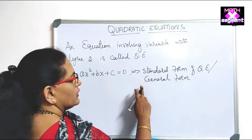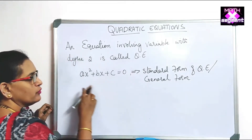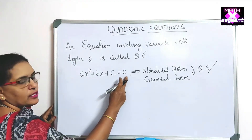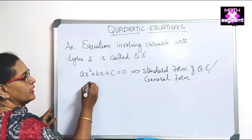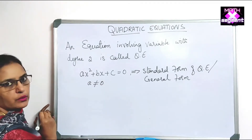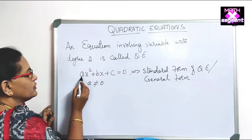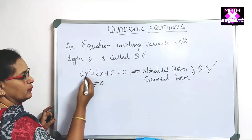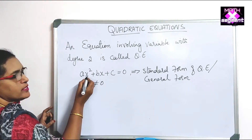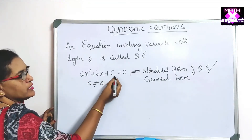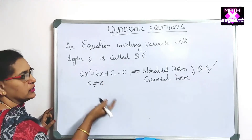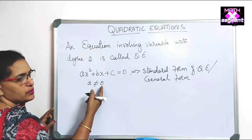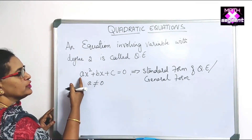The standard form of a quadratic equation is ax² + bx + c = 0, where a is not equal to 0. If a were 0, the equation would become a linear equation, because 0·x² = 0, leaving bx + c, which is linear. That is why the coefficient of x² cannot be 0.